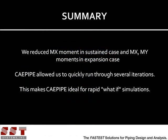To summarize, here's what we did. To reduce the excessive support loads in the operating case, we found that we had to reduce the MX moment in the sustained case and the MX and MY moments in the expansion case. We tried a couple of ideas quickly inside KPipe. First, we reduced the MX moment in the sustained case by adding a vertical support near the anchor. Then we found that adding a lateral support at a nearby T-section made the expansion moments worse. Therefore, we changed the vertical support to a guide, which reduced all three moments to manageable levels.